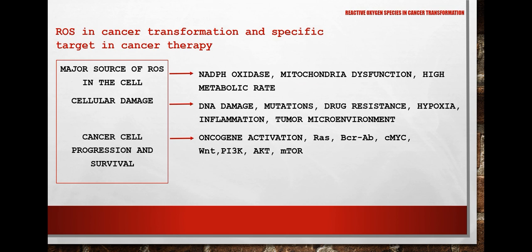Regarding specific targets in cancer therapy and the role of ROS in cancer transformation: major sources of ROS include NADPH oxidase, mitochondrial dysfunction, and high metabolic rate. Cellular damage caused includes DNA damage, mutations, drug resistance, hypoxia, tumor microenvironment inflammation, and increased cellular stress.